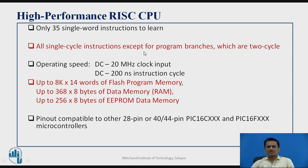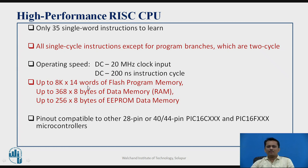There are a few instructions involving jump or call, which are two machine cycle instructions. Regarding operating speed, it can operate on a clock of up to 20 MHz. In one machine cycle there are four clock cycles, so a 20 MHz clock results in a 4 MHz machine cycle frequency, giving a 200 nanosecond instruction cycle time.